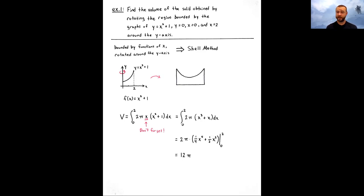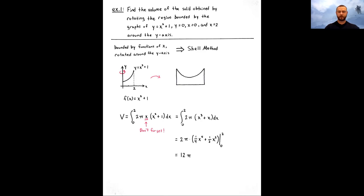That extra factor of x, we can multiply it into parentheses with the function of x, and have a really simple antiderivative. We basically integrate x cubed plus x from 0 to 2. The actual calculation at the end should be very minimal. The antiderivative is straightforward using the power rule. You should get 12π for the volume.